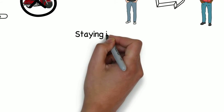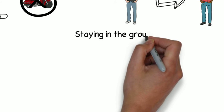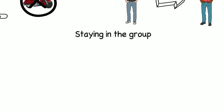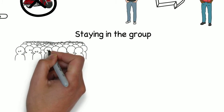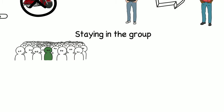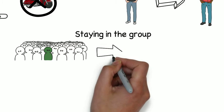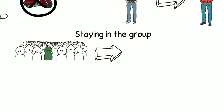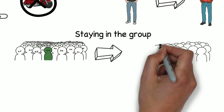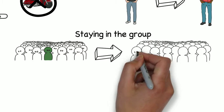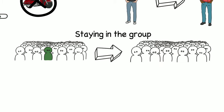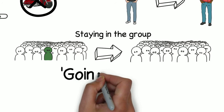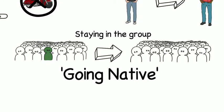Once a researcher is in a group, their next concern should be staying in the group. To stay, a researcher must do what is expected of them and follow instructions. However, this poses an issue: the researcher must be involved to understand the group but risks becoming overly involved, meaning they are no longer objective and start to identify with the group, leading to biased observations. This is called going native.